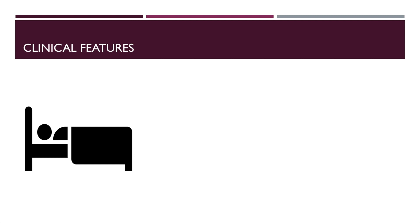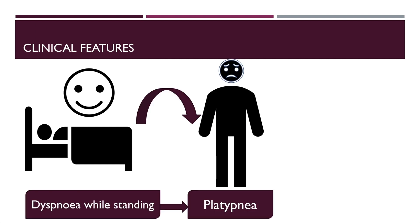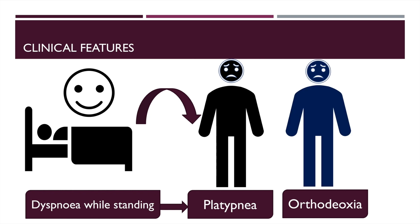The clinical features of hepatopulmonary syndrome are unique. A patient in the supine position feels fine. However, when a patient with hepatopulmonary syndrome assumes a standing position, he feels breathless — dyspnea while standing is called platypnea. The patient also desaturates in a standing position and develops cyanosis; this condition is called orthodeoxia. On assuming a standing position, there is increased gravity-dependent intrapulmonary shunting.